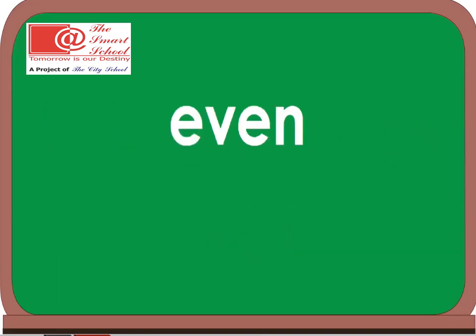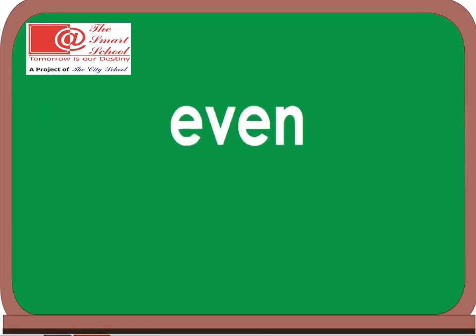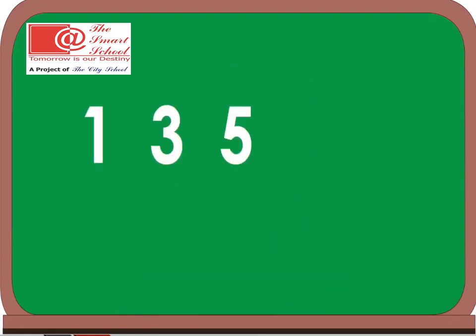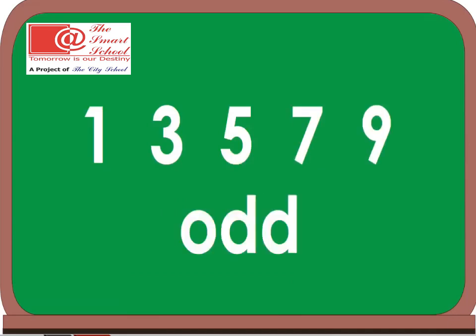Even and odd, even and odd — two different sets of numbers. One, three, five, seven, and nine are some of our odd numbers.